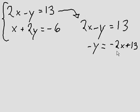So negative y is equal to negative 2x plus 13. And I'm going to multiply both sides by negative 1, so that I make the y positive on this side of the equation. So this becomes 2x minus 13.